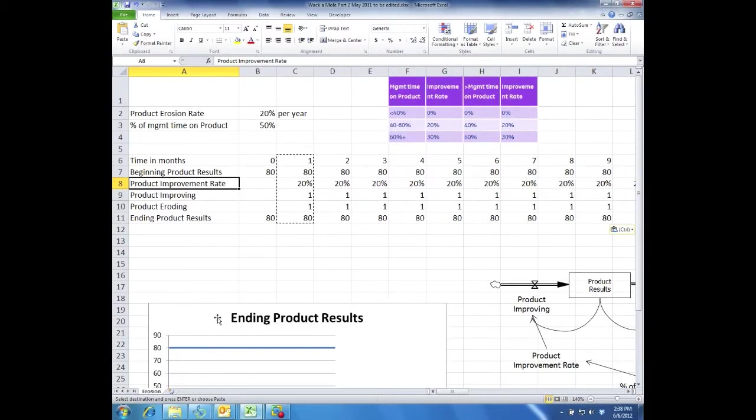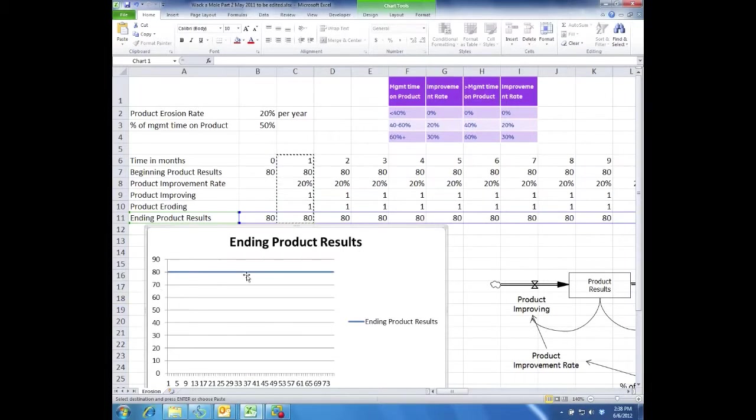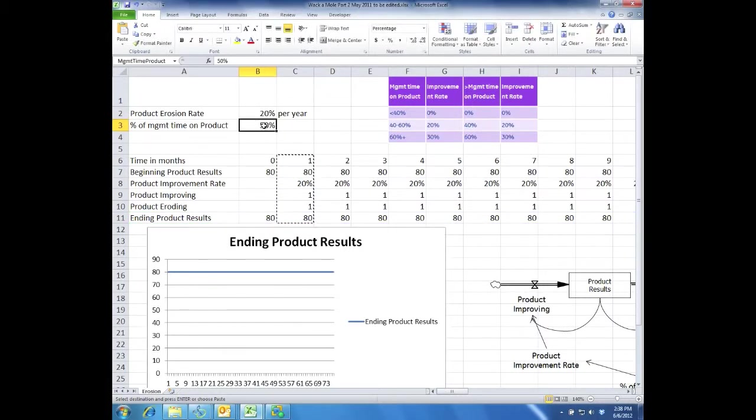So if you look at this graph down here you can see the product results don't change. And that's because since we spend 50% of time on the product we improve it 20% a year and it erodes 20% a year. So it really nets to nothing. It started at 80 and ends at 80 because you're improving it and it's eroding at the same rate. So if we spend 35% of time on the product, it looks like it did before. It just erodes. There's no improvement.